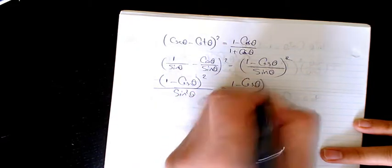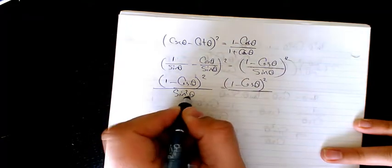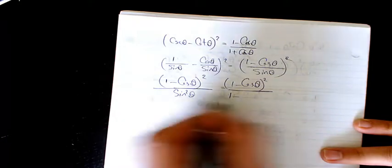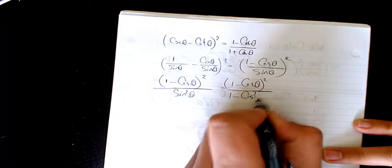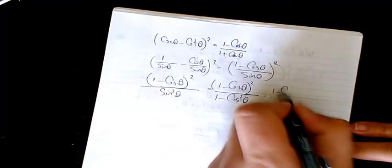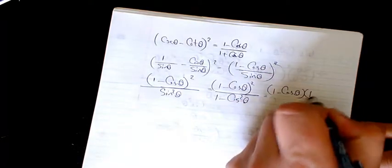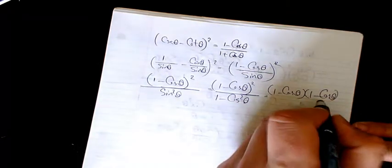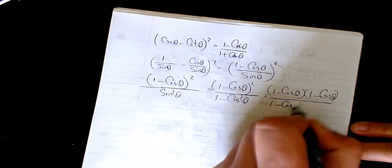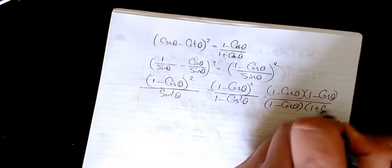1 minus cosine squared divided by sine squared. Since sine squared is 1 minus cosine squared, it will be 1 minus cosine theta times 1 minus cosine theta divided by 1 minus cosine theta times 1 plus cosine theta.